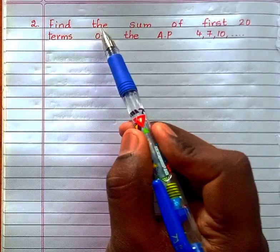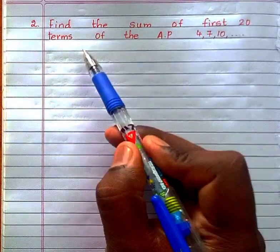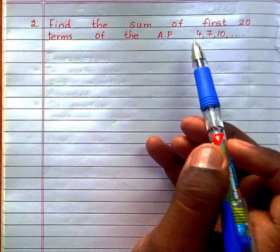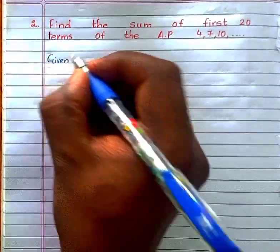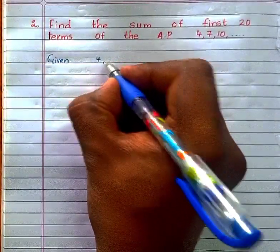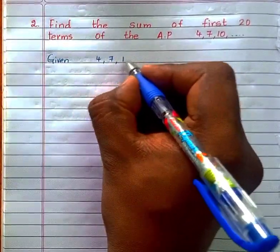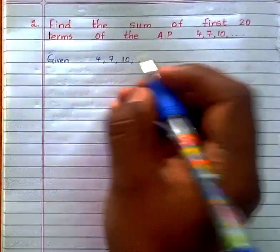Moving to second question of passing package part 1: find the sum of first 20 terms of the AP 4, 7, 10 and so on. Now, write down the given AP that is 4, 7, 10 and so on.